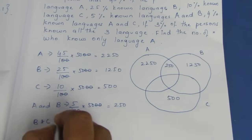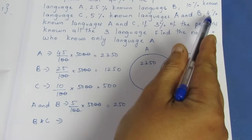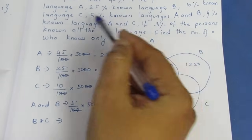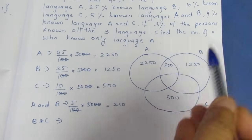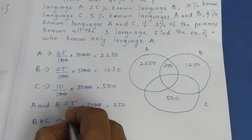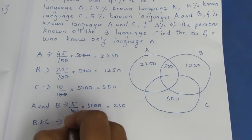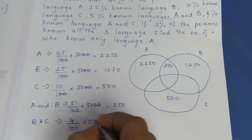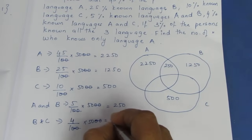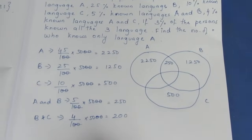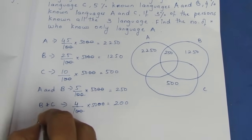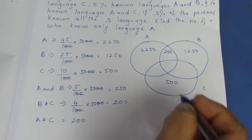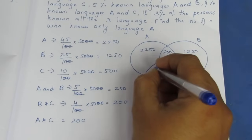Next, B and C is 4%. So B intersection C is 4 divided by 100 into 5000, which gives 200. B intersection C is 200.